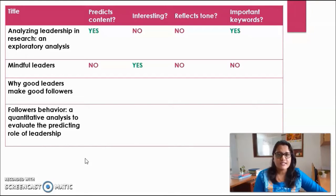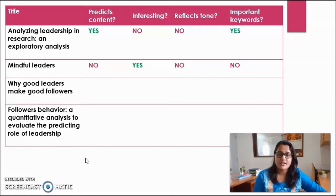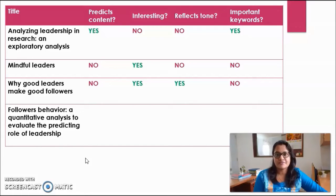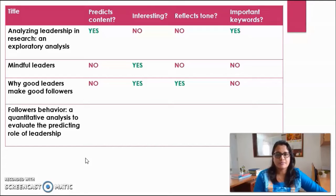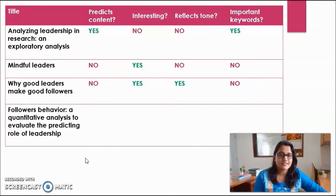Looking at 'Mindful Leaders,' the content seems interesting — there must be something important about the leaders — but does it enable you to predict the content? No. Does it reflect the tone or the kind of study conducted? No. Does it provide important keywords? Absolutely not. Moving to 'Why Good Leaders Make Good Followers,' the content is not clearly defined — what kind of leadership and what kind of follower behavior is being discussed? What does 'good' even mean here? But the title is interesting and it reflects a tone of predictability. Unfortunately, it does not give good keywords for a Google search.